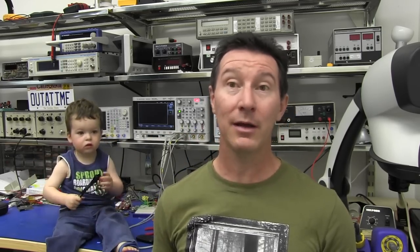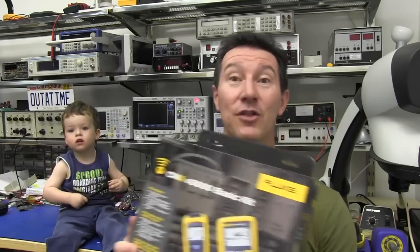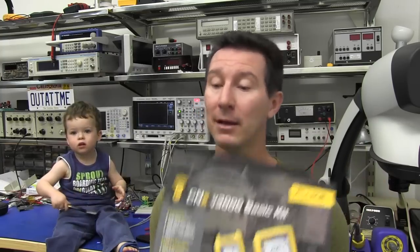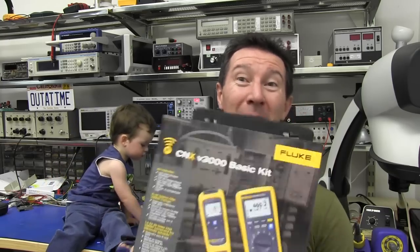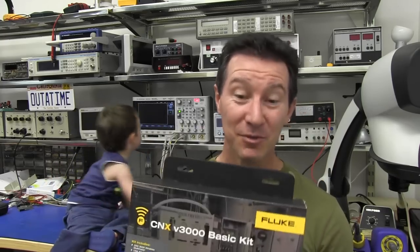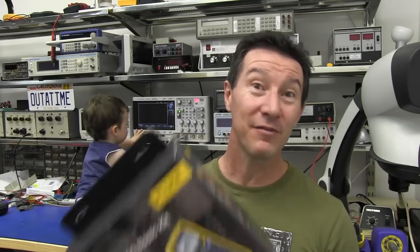I'll be using the EEVblog contest wobulator program just to pick a name from that particular thread at random, and the winner wins a Fluke CNX 3000 wireless multimeter anywhere in the world. And no, I will not mark down the value on the customs form. I won't lie on the bloody customs form.